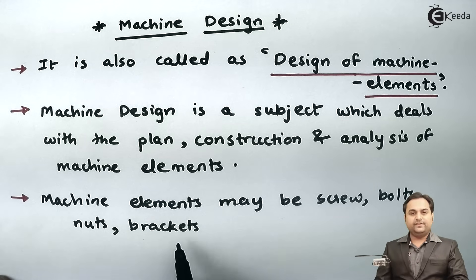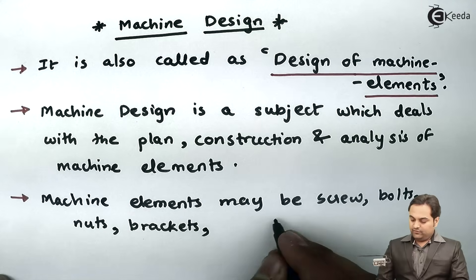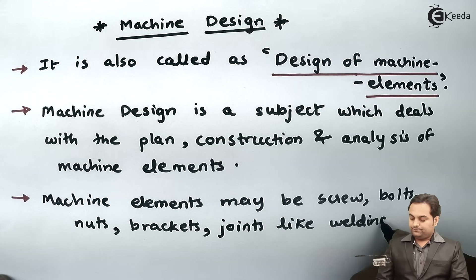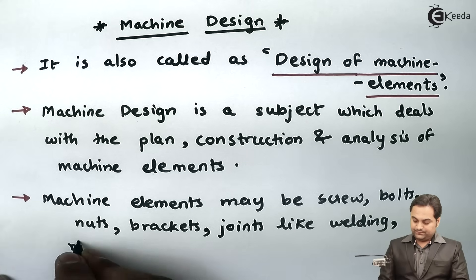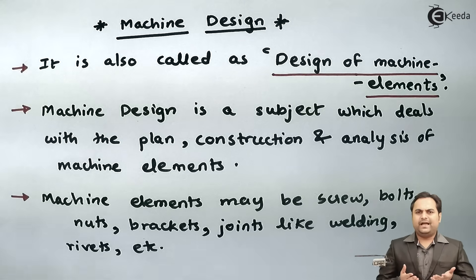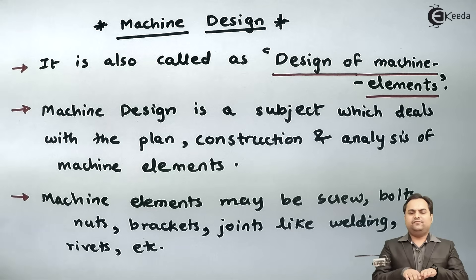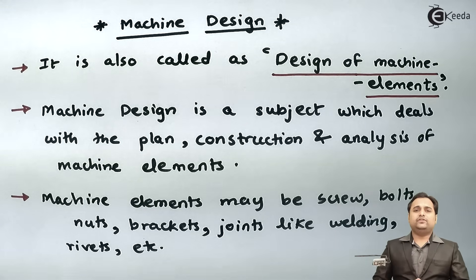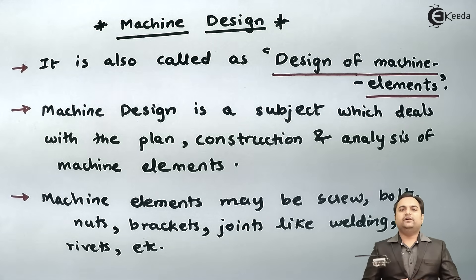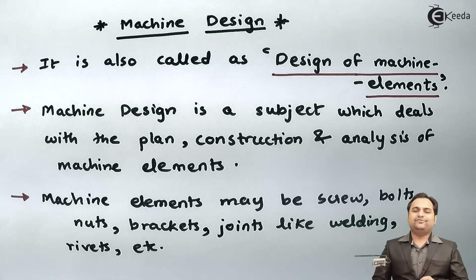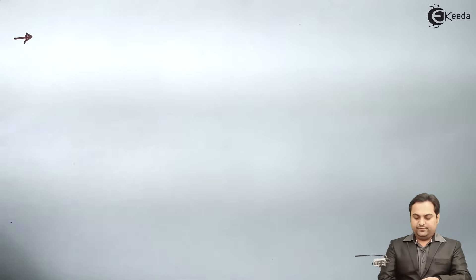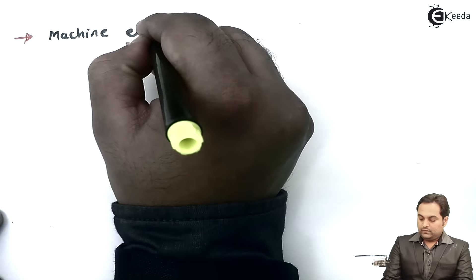In machine design we would be designing brackets, joints like welding, rivets, etc. For example, if we want to join two plates and apply a weld between them, we should have the knowledge of machine design, because we need to know how much load that welded joint will carry, and accordingly we will be welding. So it requires the knowledge of machine design.